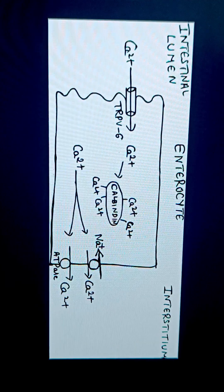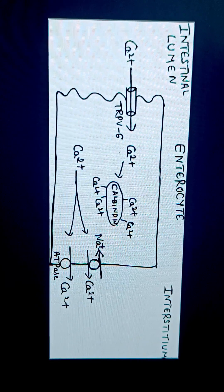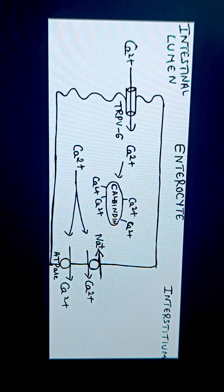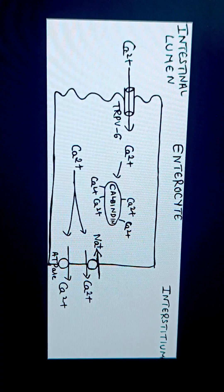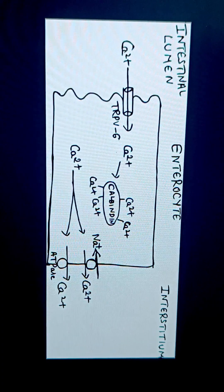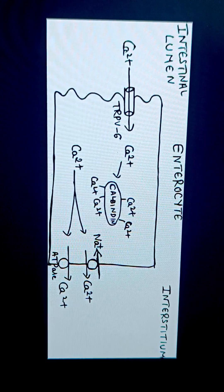Calcium absorption in the intestine: First, from the intestinal lumen, calcium enters into the enterocyte. Dietary calcium is present as calcium salts. These calcium ions are solubilized in the acidic medium in the stomach.